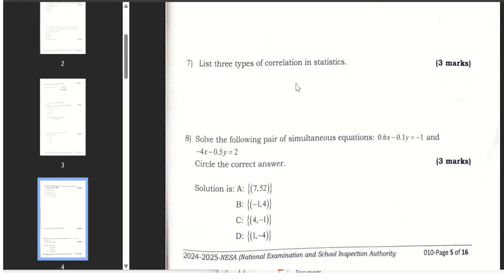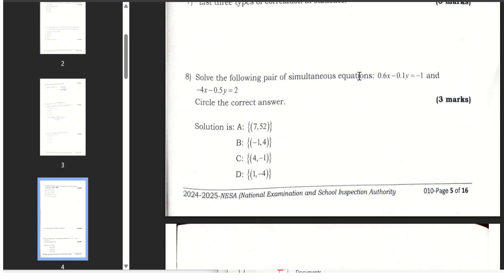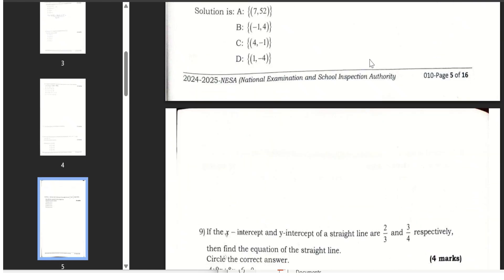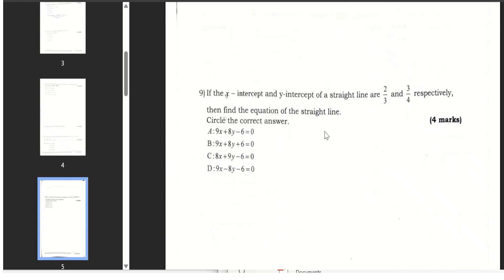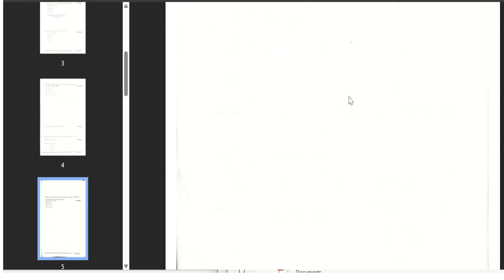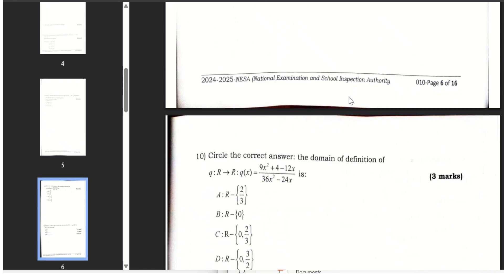There was a mistake in the national exam. Here is the types of correlation, solving the pair simultaneous equation. You know this is in senior two. Here the y-intercepts and intensive questions.